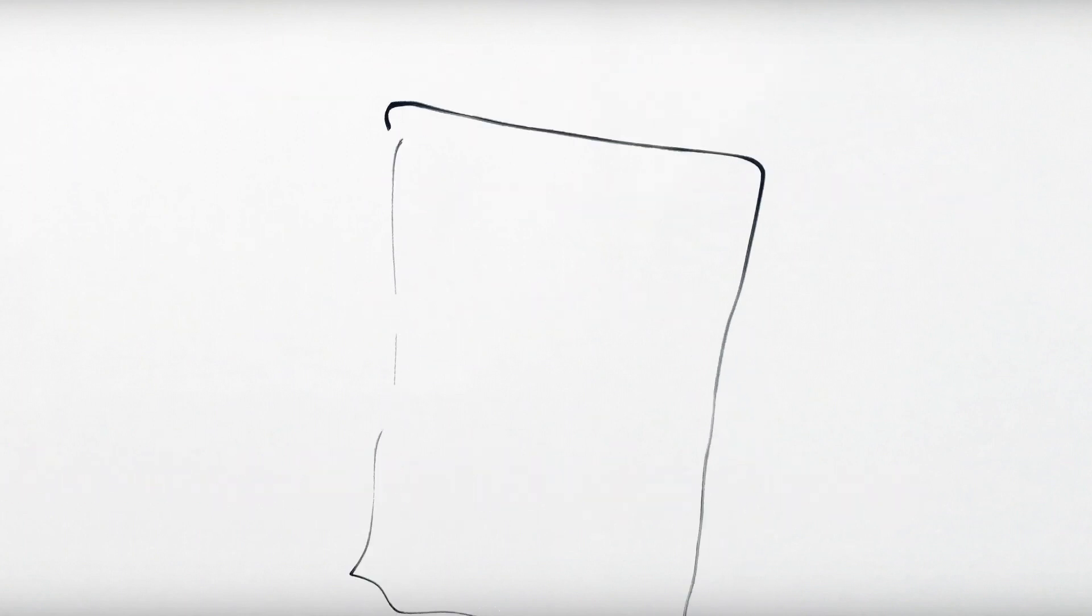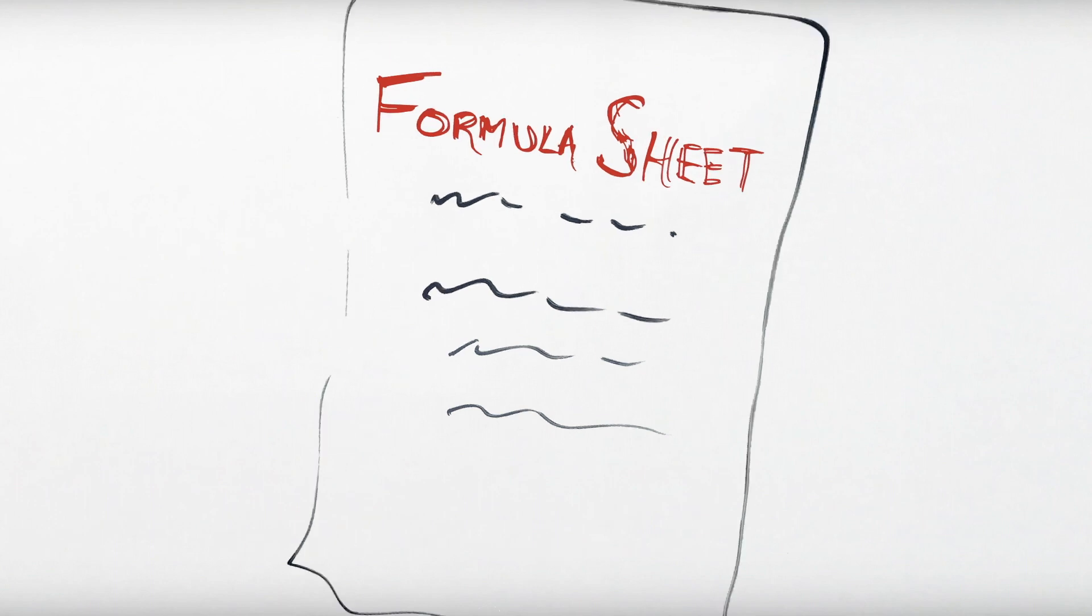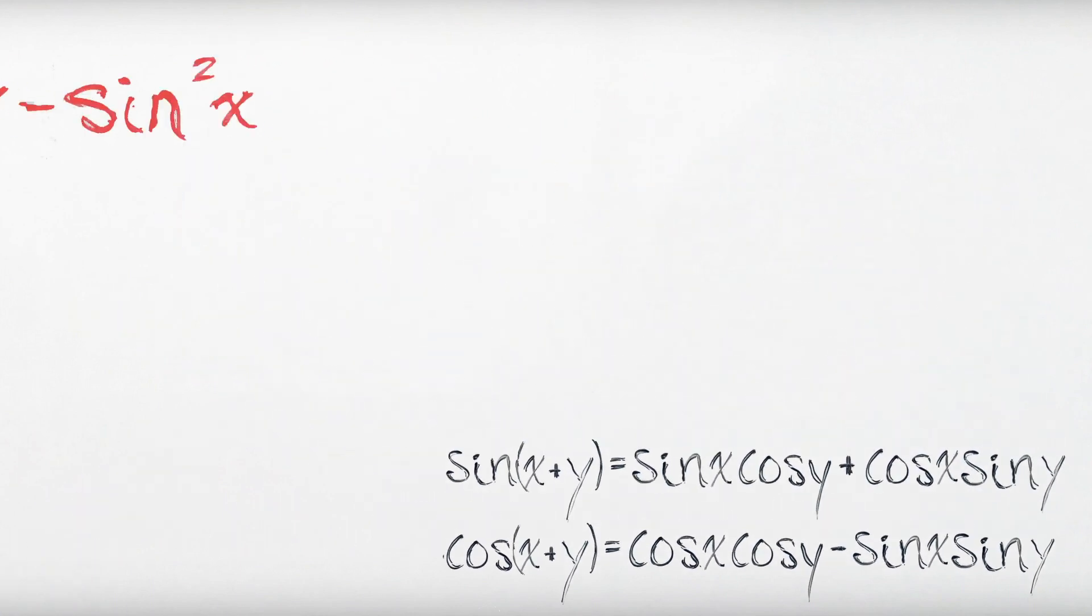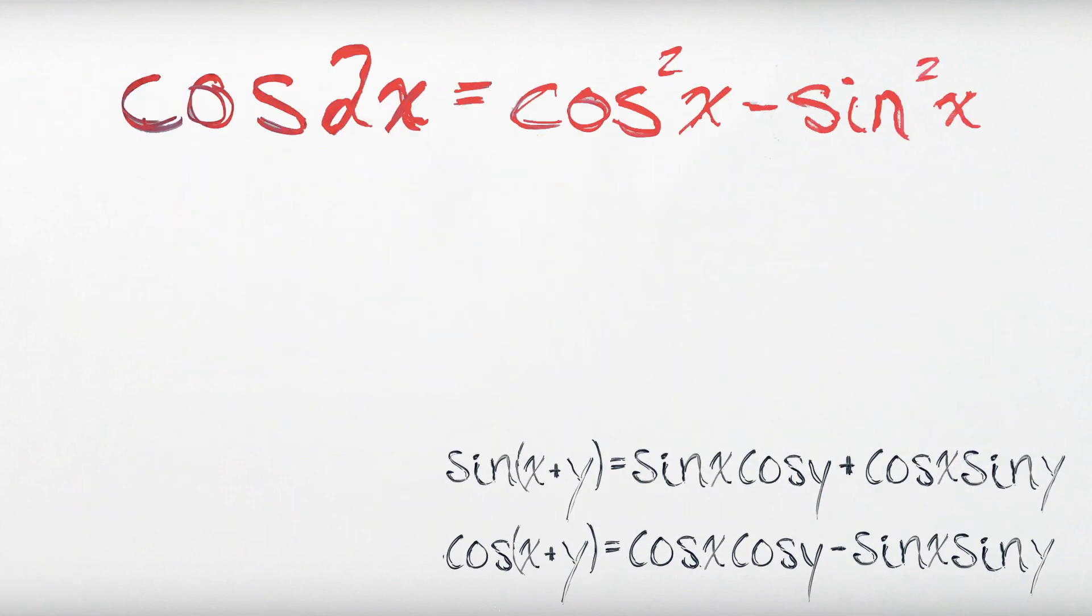That was fun, let's do another. This time, we're going to lean on our formula sheet and these compound angle identities to prove cos of 2x equals cos squared x minus sine squared x.